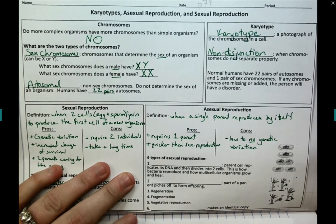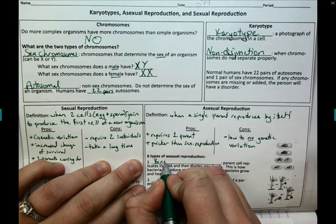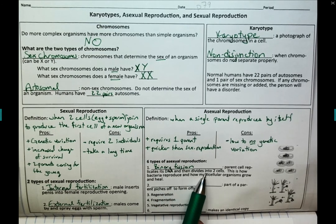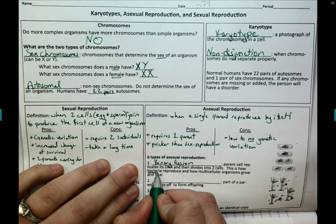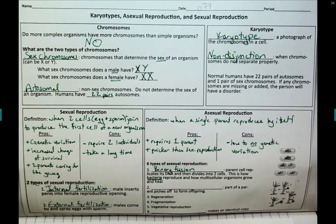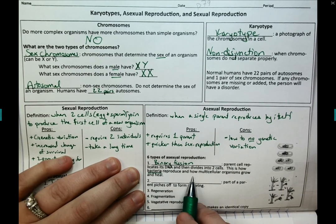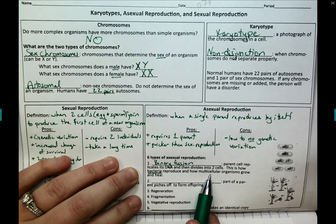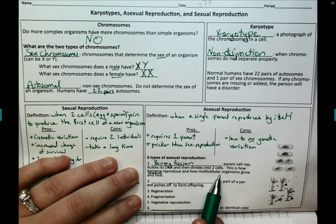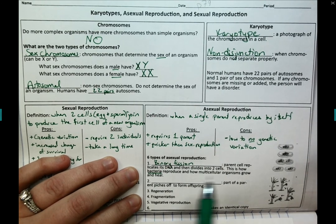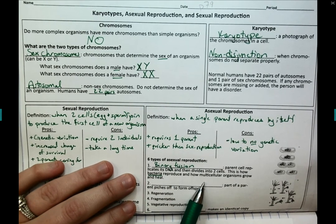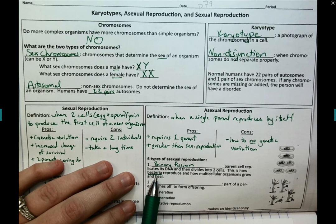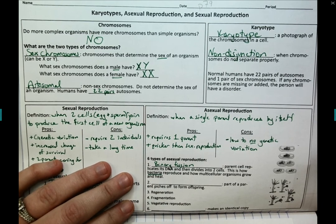We're going to look at six types of asexual reproduction. The first is binary fission, where the parent cell replicates its DNA and then divides into two cells. This is how bacteria reproduce — the majority of bacteria reproduce through binary fission. This is also how multicellular organisms grow and heal. For multicellular organisms like humans, we have mitosis, where we start with one cell and end up with two daughter cells. Binary fission and mitosis are essentially the same thing, except mitosis helps us grow and heal, whereas binary fission is how bacteria reproduce to make more offspring.